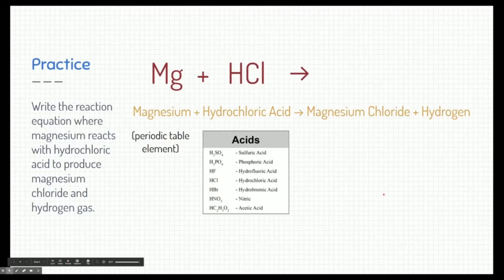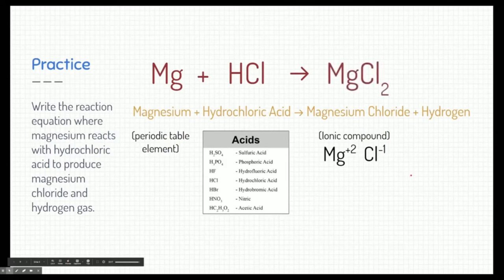All right, those two reactants react to form two products, magnesium chloride and hydrogen. Well, magnesium chloride is a compound. Specifically, it's an ionic compound because it's a metal and a non-metal. So, we have to worry about the charges. So, Mg and Cl come together to make MgCl2. The last piece is hydrogen. Now, hydrogen is a special molecule because it's one of those special diatomic elements. So, we can't just write H like we did with magnesium. We have to write H2 because it's diatomic.